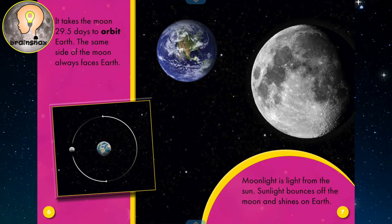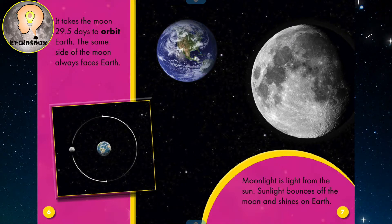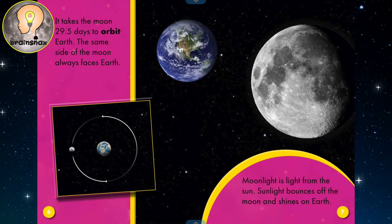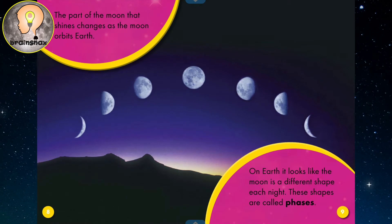Moonlight is light from the sun. Sunlight bounces off the moon and shines on Earth. The part of the moon that shines changes as the moon orbits Earth.